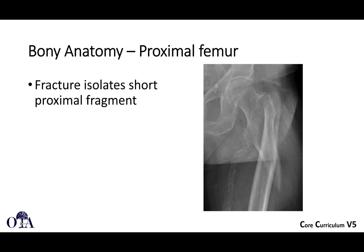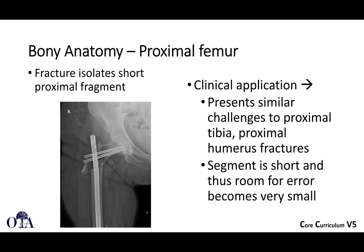The fracture itself tends to isolate a short proximal fragment, and on that proximal fragment there are a lot of deforming forces. When you have this very short proximal fragment, you have similar challenges to proximal tibia or proximal humerus fractures, where the room for error becomes very small in terms of implant placement and trajectory. In this case, you can see a malreduction: there's a lateral entry point and a trajectory going very lateral to medial, which sets you up for a varus malreduction.